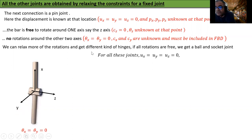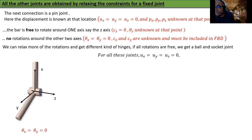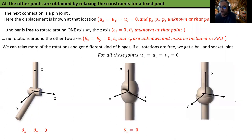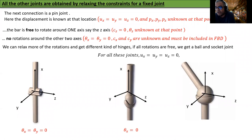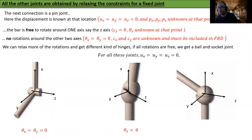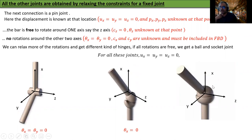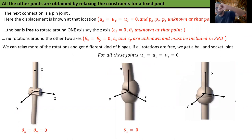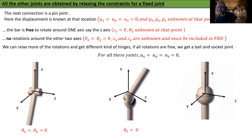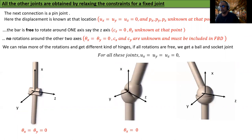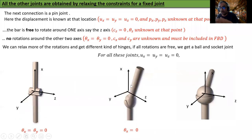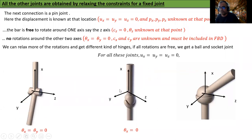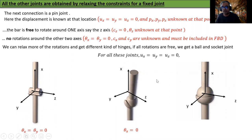We can relax more rotations to get different kinds of hinges. If all rotations are free but translations are prevented, we get a ball and socket joint, where ux = uy = uz = 0. There are a variety of different kinds: one type allows only θx to be non-zero, while in the ball joint θx, θy, θz — none of them are zero — you can twist it and do all kinds of things. What is not possible in a ball joint is no translation, but any combination of rotations is possible.